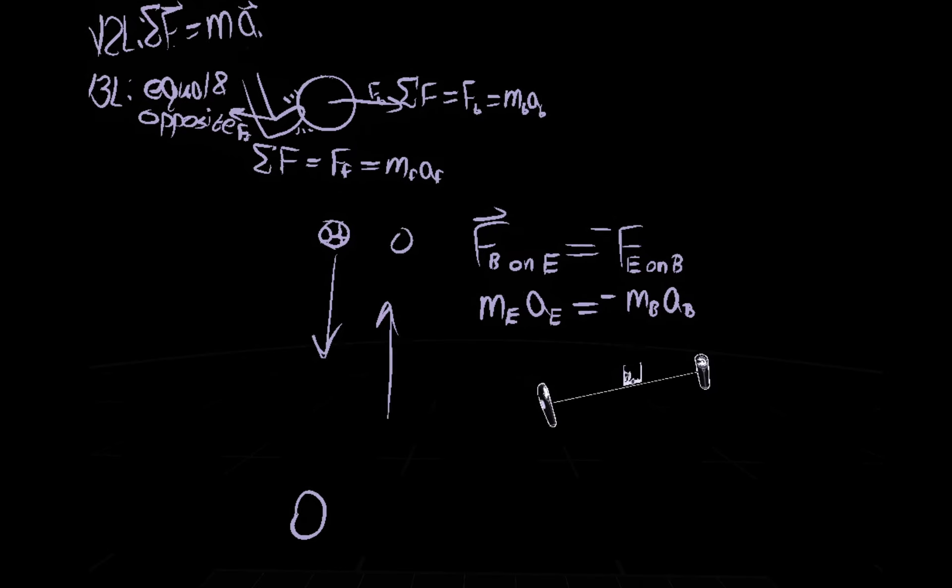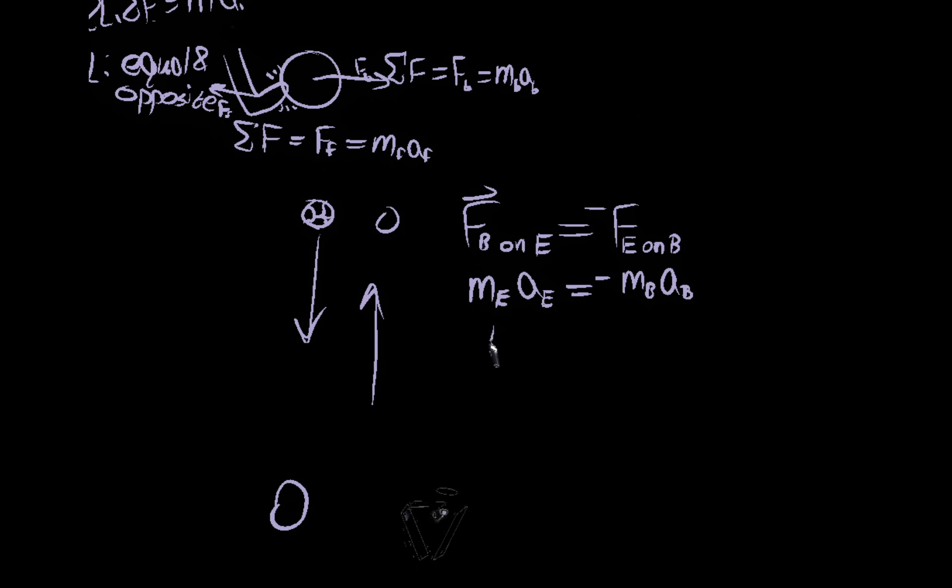Well, the mass of the earth is very, very, very large. Huge. Big M. Whereas the mass of the ball is very small, just a little m. So the forces are the same, and therefore the accelerations will change proportionally.